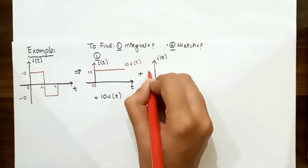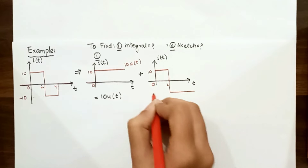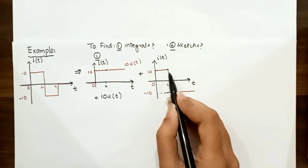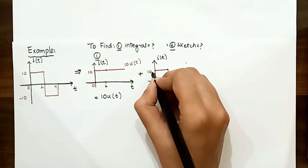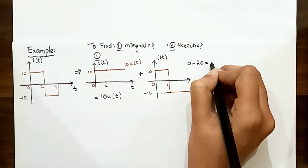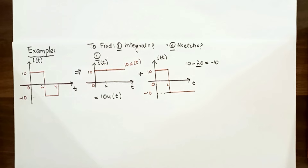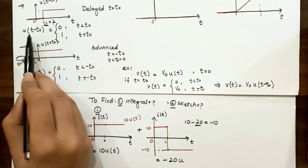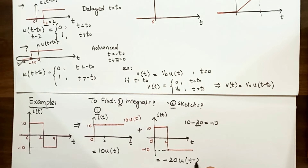Adding the next part: as the function achieves the value of 10, it goes downward at time t equal to 2 and attains the value of minus 10. So at t equal to 2 it goes from plus 10 to minus 10. To achieve minus 10 from plus 10 we add minus 20. The change happens at t equal to 2, which is t-naught, so we write u(t − 2), since the change happens at t equal to 2 not at 0.